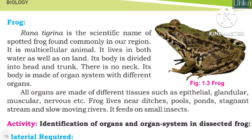Different organs are made of different tissues, such as epithelial tissues, glandular tissues, muscular tissues for muscles, and nervous tissues for neurons. All these different tissues make up organs, and organs together form an organ system.